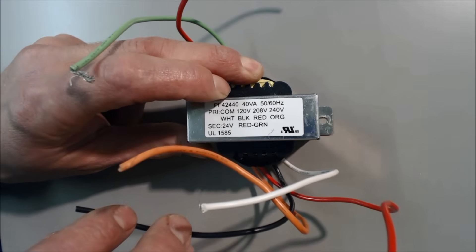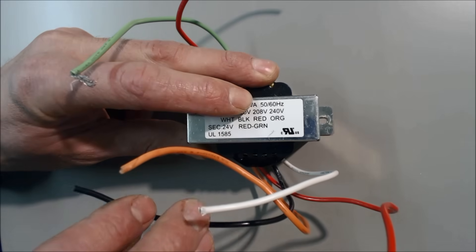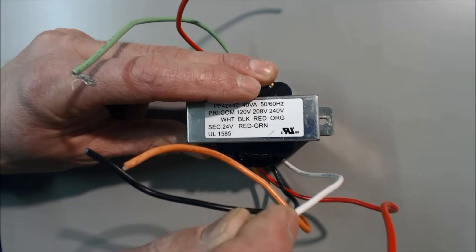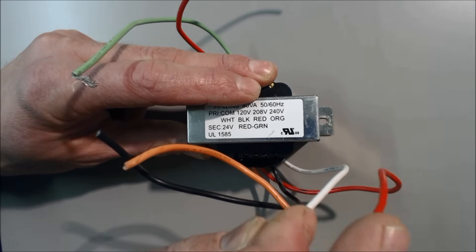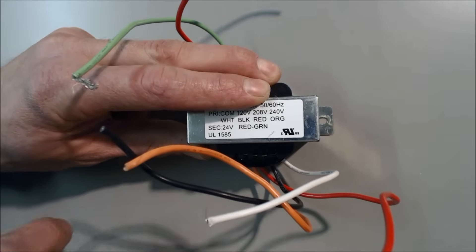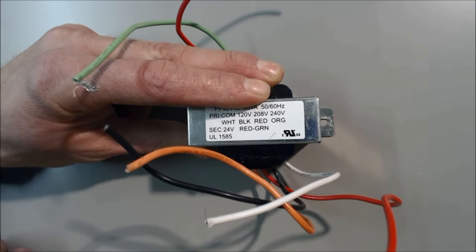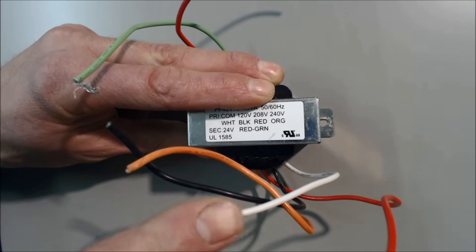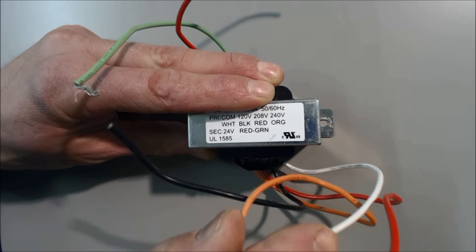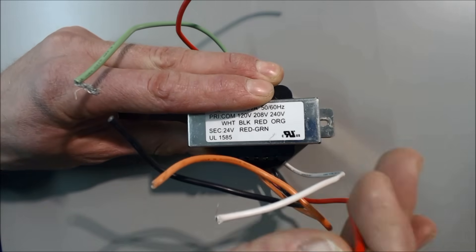If you were to use this on a 208 system, then you would use the white and the red wire. If you're going to wire this into a fan coil or air handler, it would be 240 volts and you could use the white and the orange.